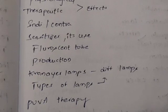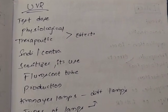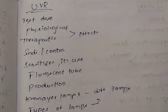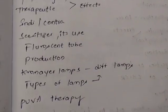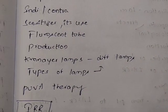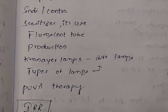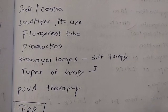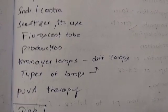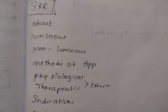Next is UVR — test dose, effects, indications, contraindications, and sensitizers. Fluorescent tube production, chromere lamps. UVR eye protection is also important.